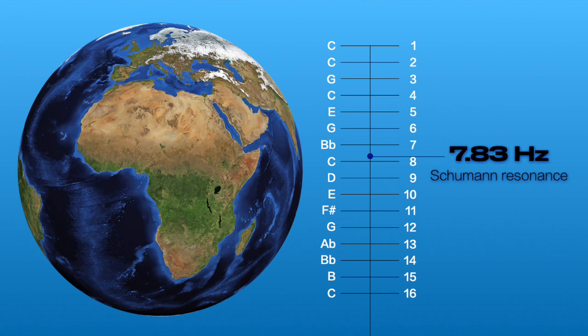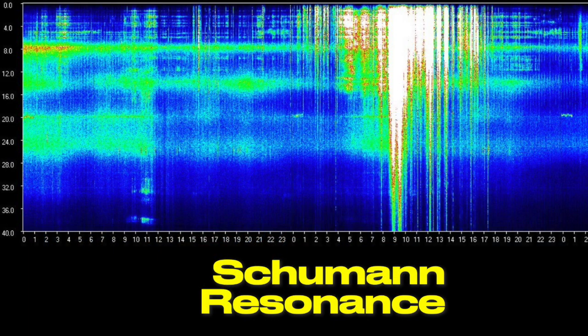The Earth is said to resonate at a base frequency of 7.83 Hz, a slow vibration generated by lightning events in the cavity between the ionosphere and the surface of the Earth. It's one of the Schumann resonance frequencies.